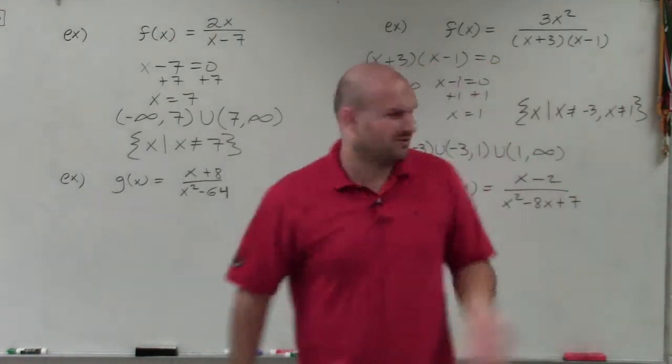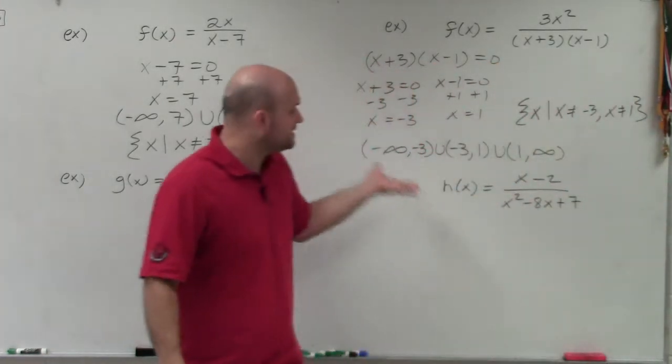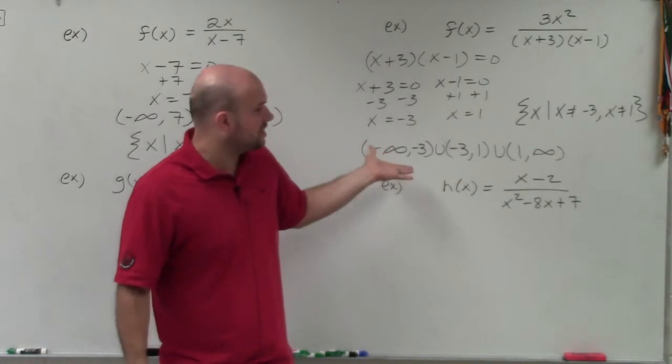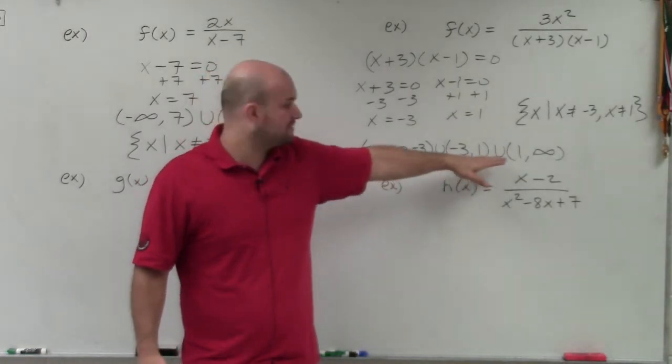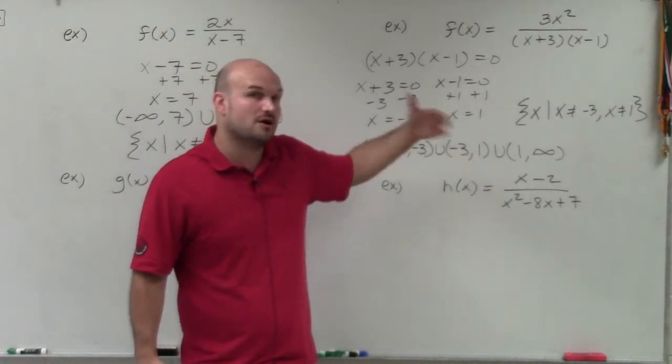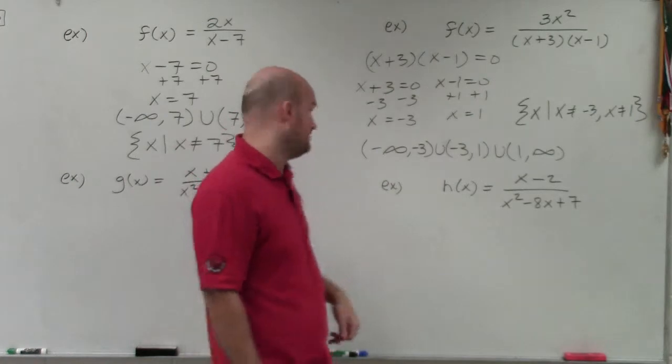We write the domain as negative infinity to negative 3, union negative 3 to 1, union 1 to infinity. Or in set notation: x such that x cannot equal negative 3 and x cannot equal 1. The set notation is much easier, and it's common in this course, so I want to make sure I include both formats.